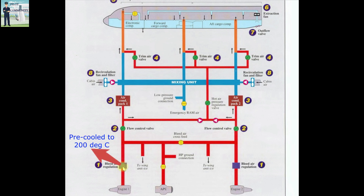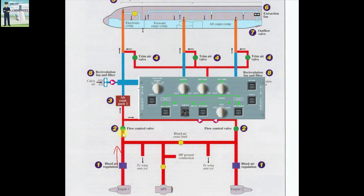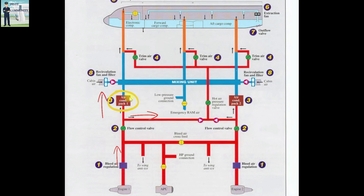The very hot air from the engine bleed is pre-cooled to a temperature of 200 degrees centigrade and is pressure regulated. It then goes to the pack flow control valve, which controls the quantity of fresh air brought into the cabin. The pilots control this quantity using a knob in the cockpit, set depending on the number of passengers. After passing through the pack flow control valve, the air takes two pathways: one part goes through the hot air pressure regulation valve, and the other part goes through the air conditioning pack.